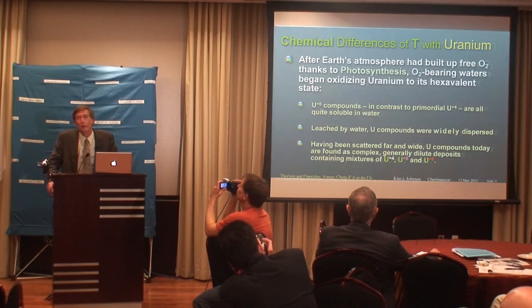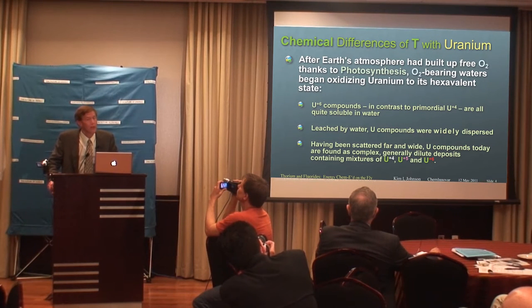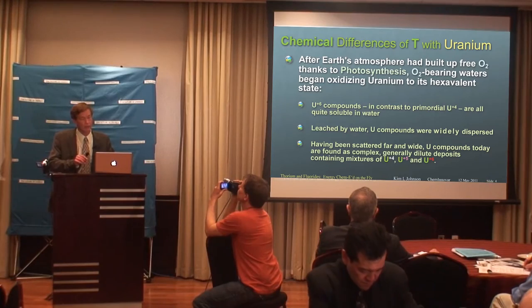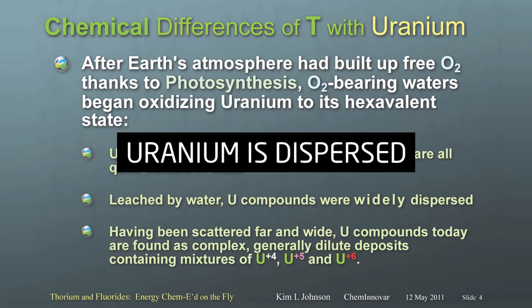There are some chemical differences between thorium and uranium. Leached by water, uranium compounds were widely dispersed. And having been scattered far and wide, uranium compounds today are found as complex, generally dilute deposits containing mixtures of tetra-, penta-, and hexavalent uranium.